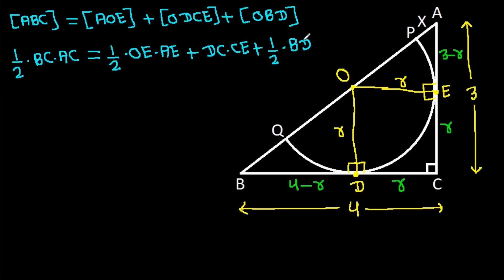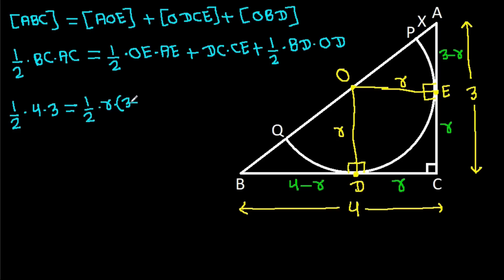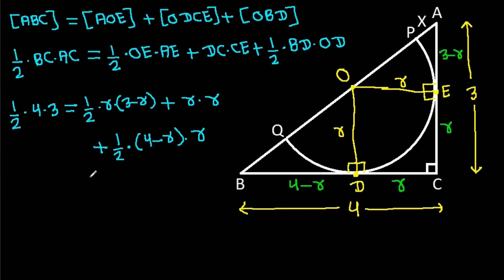Area of OBD equals one-half times base BD times height OD. So: one-half times 4 times 3 equals one-half times OE times AE, plus DC times CE, plus one-half times BD times OD. Substituting: one-half times R times (3 minus R), plus R squared, plus one-half times (4 minus R) times R.